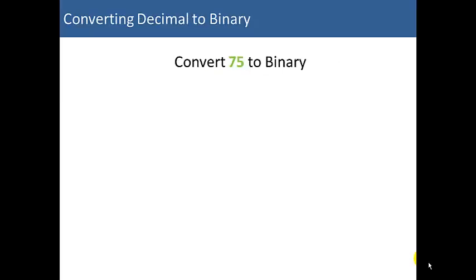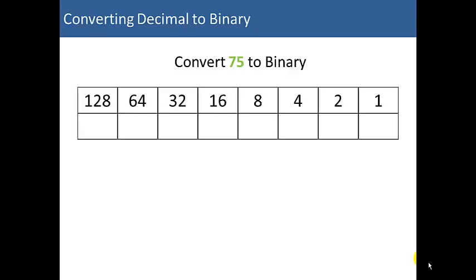Now, let's try another conversion. Let's convert a decimal number to binary, going the other direction this time. So, we're going to convert 75, decimal number 75, to binary.